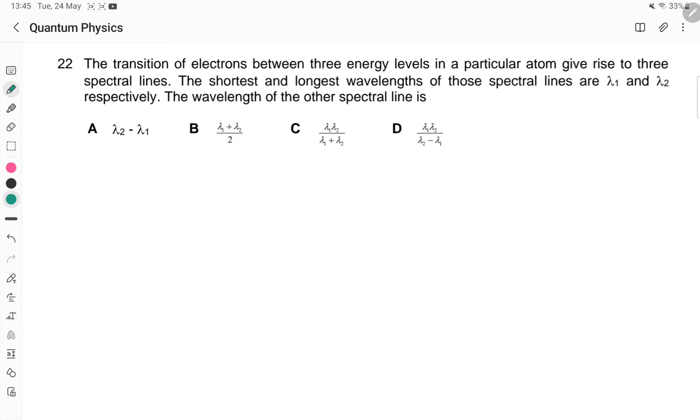For this question we have transitions between three energy levels for a particular atom. Two of the spectral lines, the shortest and longest wavelengths λ₁ and λ₂. We know that ΔE = hc/λ. So with that, let's draw in the energy level.